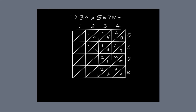2 times 6 is 12. 2 times 7 is 14. 2 times 8 is 16. Now for the final column. 1 times 5 is 5 — 5 is less than 10, so put the 5 below the diagonal and a 0 above. 1 times 6 is 6. 1 times 7 is 7. 1 times 8 is 8.